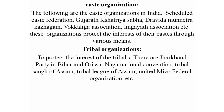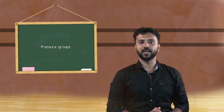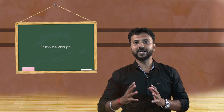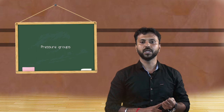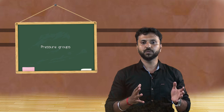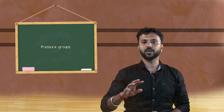Caste organizations working as pressure groups include India's Scheduled Caste Federations, Gujarat Kshatriya Sabha, Dravida Munnetra Kazhagam, Vakkaliga Association, and Lingayat Association. These organizations protect the interests of their respective castes through various means. These different caste, religious, tribal, business, and labor groups work for their own people — they have no specific ideology but are united by common interests. This reflects the regionalism concept, and pressure groups are distinct from political parties.